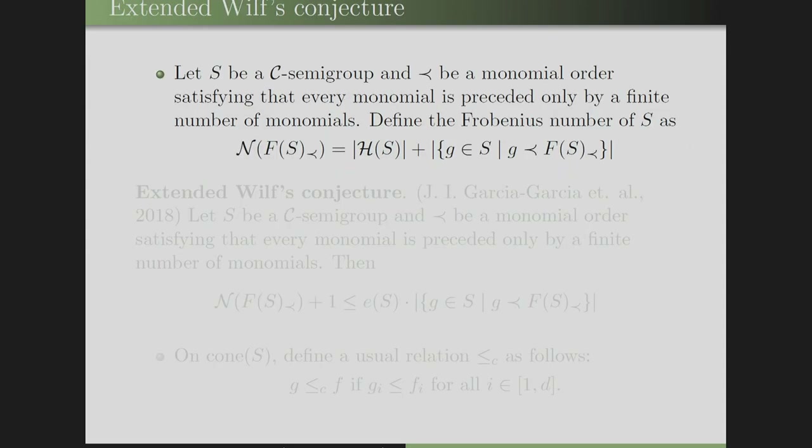We now define the extended Wilf's conjecture. Wilf's conjecture was originally stated for numerical semi-groups by Wilf in 1978. Since C semi-groups are natural generalizations of numerical semi-groups — in the sense that the complement of a numerical semi-group in the naturals is finite, and similarly the complement of a C semi-group in the cone is finite — every numerical semi-group is also a C semi-group. For a C semi-group, the Frobenius number N(F(S)) is defined as the cardinality of H(S) plus the cardinality of {G in S : G ≤ F(S)} with respect to the term order.